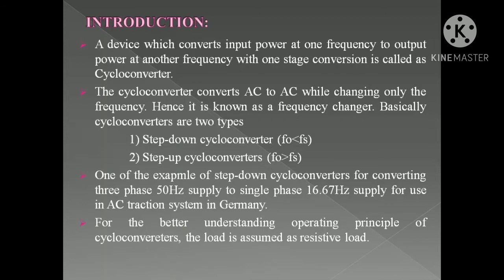Both types have their own different uses for different requirements. One example of a step-down cycloconverter is converting a three-phase 50 Hz supply to a single-phase 16.67 Hz supply for use in an AC traction system in Germany. That may be a slightly old example but many present examples exist — you can search and find them on the internet. For better understanding, we are using a resistive load for the cycloconverter to understand its operation.